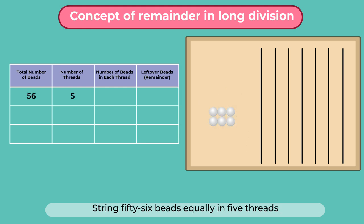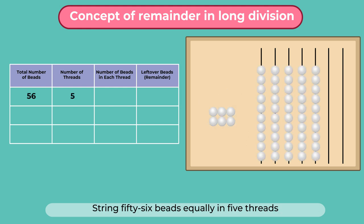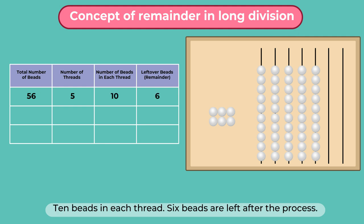Let's string 56 beads equally in 5 threads. That is 10 beads in each thread. And we are left with 6 beads after the process.